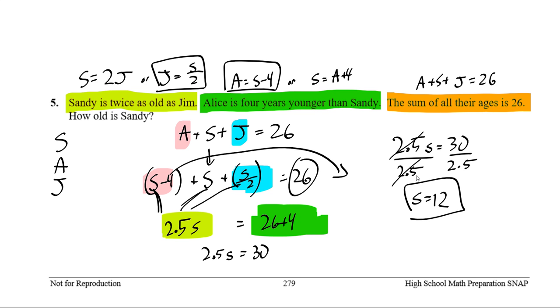So Sandy should be 12 years old. If Sandy is twice as old as Jim, so Sandy is 12, Jim is half the age of Sandy. Jim should be 6 years old, which we get from here. Jim is Sandy's age divided by 2. Alice is 4 years younger than Sandy, so Alice should be Sandy's age minus 4. So 12 minus 4 is going to be 8. And if we add up 12 plus 8, this is our check, plus 6, we should get 26. And 12 plus 8 is 20, plus 6 is indeed 26. So the check works out.